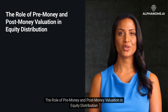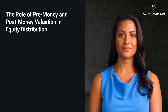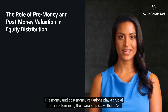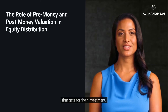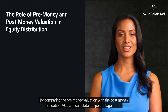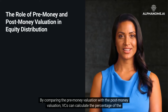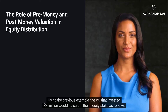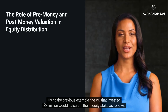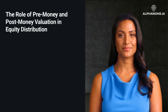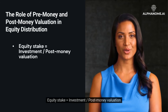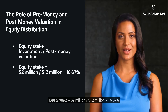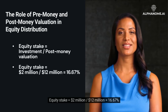Pre-money and post-money valuations play a crucial role in determining the ownership stake that a VC firm gets for their investment. By comparing the pre-money valuation with the post-money valuation, VCs can calculate the percentage of the company that they now own. Using the previous example, the VC that invested $2 million would calculate their equity stake as follows: equity stake equals investment divided by post-money valuation, which equals $2 million divided by $12 million, equals 16.67%.